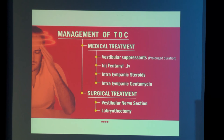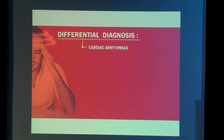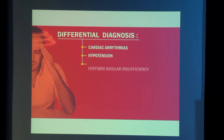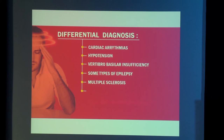It is imperative to understand whether a drop attack is due to Tumarkin's otolithic crisis, and we must go through various other causes of drop attacks. These include cardiac arrhythmias, hypotension, vertebro-basilar insufficiency, some types of epilepsy, multiple sclerosis, drug-induced motor disturbances, spinal deformities, deformities in the joints of the lower extremities, and many other causes. Symptoms of blurring of vision, diplopia, perioral numbness, transient loss of memory, aura, warning, and loss of consciousness are all features of drop attacks due to neurological causes.